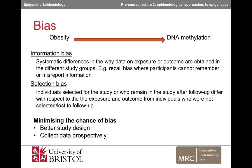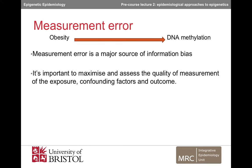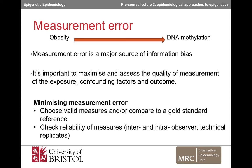Recall bias can be reduced by collecting data prospectively. Measurement error is a major source of information bias and occurs when there is error in the quality of measurements of the exposure, confounders, or outcome variables. It is important to assess measurement error and minimise it where possible by considering the validity and reliability of the measure. For example, self-reported obesity may be prone to measurement error if participants misreport their current height and weight. One way to improve the validity of a measure of obesity would be for an observer to measure height and weight directly, rather than to rely on self-reported data. The reliability of the observer's measurements could be assessed by comparing to the same measurements made by a different observer or by the same observer on a different day.